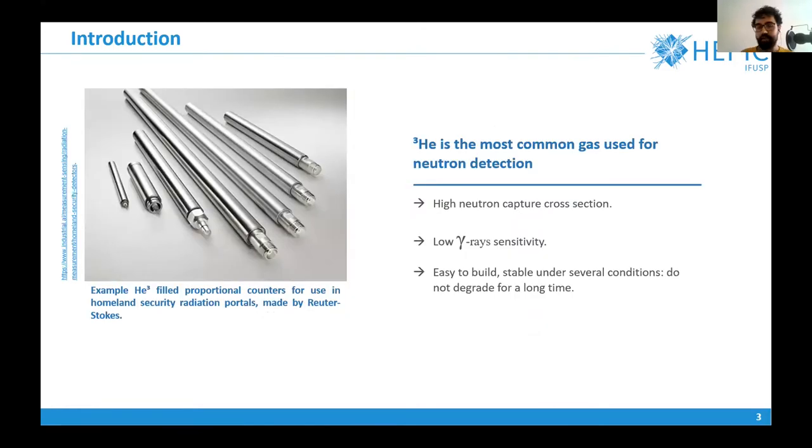Classically, the most common gas used for detecting neutrons is helium-3. Helium-3 has several advantages such as high neutron capture cross-section. It has low gamma ray sensitivity, which is nice also because you want to avoid the background radiation.